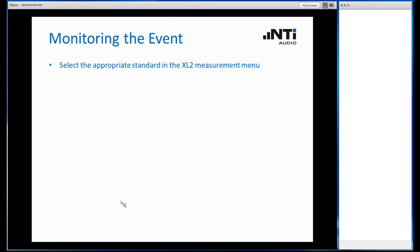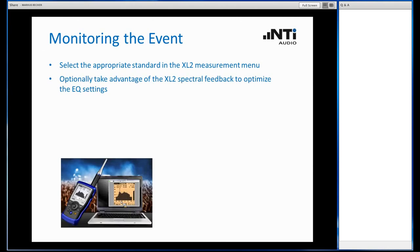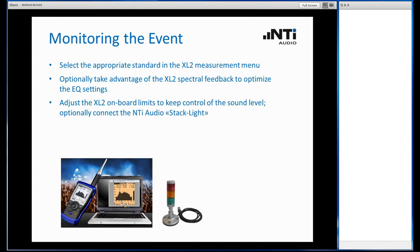So these are the final steps to be done. You should of course select the appropriate standard in the XL2 measurement menu. I am going to show you that. You can, if you like, take advantage of the spectrum feedback, the spectrum display measurement of the XL2, if you want to optimize the equalization of your setup. And then you can add a so-called stack light to visualize the feedback from the XL2. The XL2 has a small LED which gives you three different colors, either green, which means the sound pressure level is clearly below the given limits, orange would mean it's coming close to the limits, and red would mean you are exceeding the limits, so you have to adjust the volume. And this optical feedback can be shown also on this stack light, if you like.